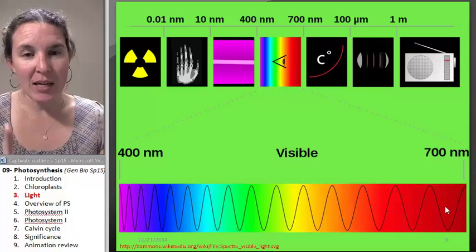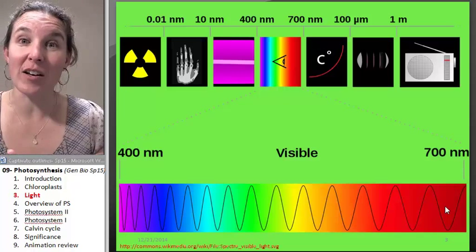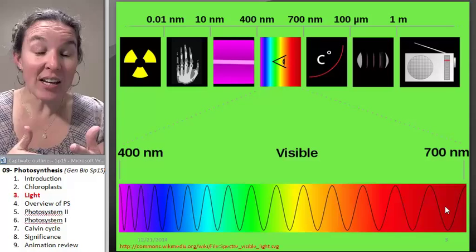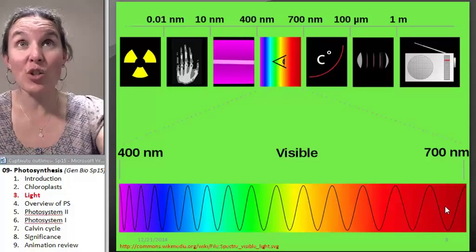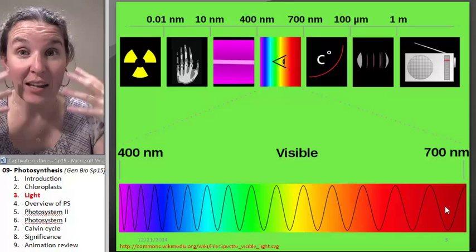This is relevant because the pigments in the chloroplasts, the chlorophyll, they're green. And actually, their job is to absorb light energy. And the more light energy they can absorb,